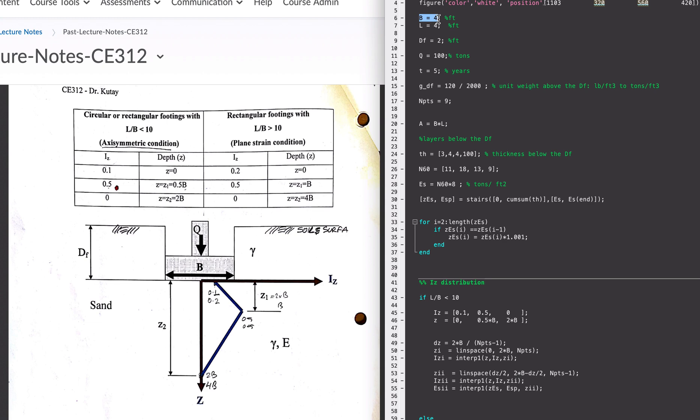Let's say B is four feet, L is four feet, and let's say depth TF is about two feet, and we have a hundred ton of load here. Let's say time is this and gamma dry is this - this is just an intermediate variable.